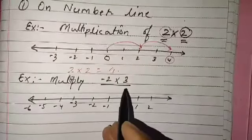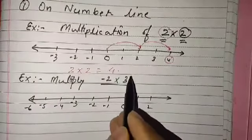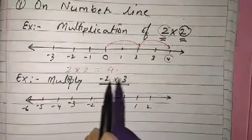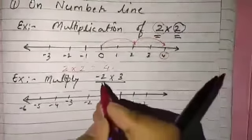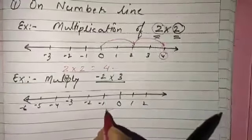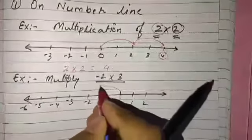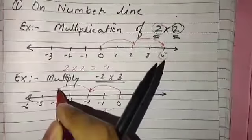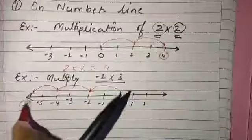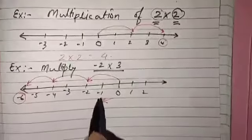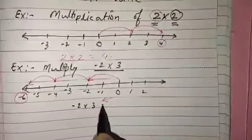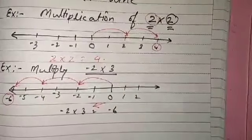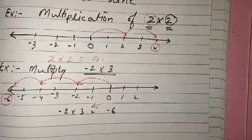We can go three steps two times, or two steps three times — both will be correct. Since the number is negative, we go to the left-hand side: two steps, three times. Step one, step two — two steps; how many times? Three times. We reach minus six. So the answer for minus 2 multiplied by 3 is minus 6.